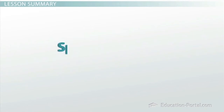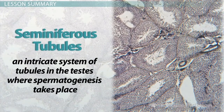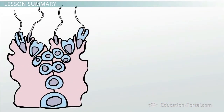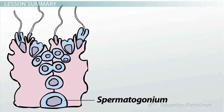Let's review. Spermatogenesis is the process by which the male gametes, called sperm, are created. Spermatogenesis takes place in the seminiferous tubules, which are an intricate system of tubules in the testes. The tubules are lined with an epithelial layer of Sertoli cells, which support and provide nutrients to the various sperm precursors. The rapidly dividing spermatogonia, or sperm cells found in the testes, are located at the base of the Sertoli cells. When a spermatogonium enters meiosis, it becomes a primary spermatocyte and migrates away from the base of the Sertoli cells.